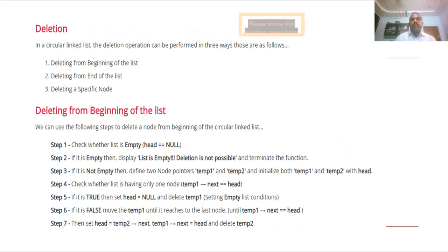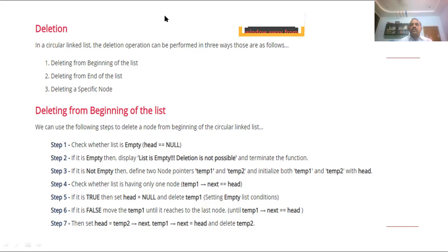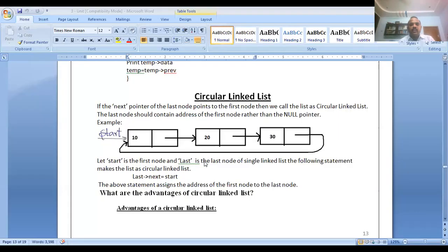Deletion operations: deleting from the beginning of the list, deleting from the end of the list, and deleting a specific node. To delete a node from the beginning of the circular linked list, the last pointer's next equals start — same approach as in single linked list but applied to the circular structure.